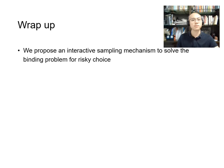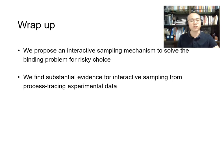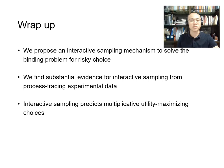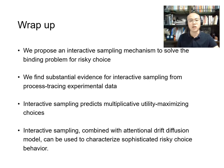To wrap up, in this paper we propose an interactive sampling mechanism to solve the binding problem for risky choice. Analyzing process-level data from six experiments, we find substantial evidence for interactive sampling. In line with our theory, we show that interactive sampling can predict multiplicative utility-maximizing choice behavior. Finally, we suggest that interactive sampling, when combined with the attentional drift diffusion model, can be used to characterize sophisticated risky choice behavior. Thanks for your interest in watching this video — all feedback is welcome.